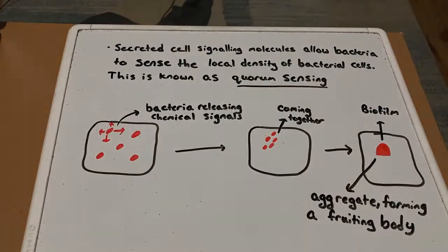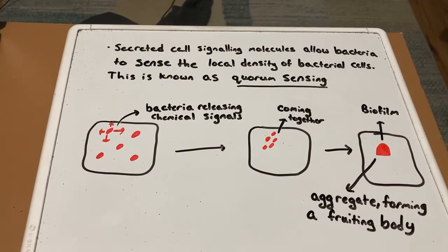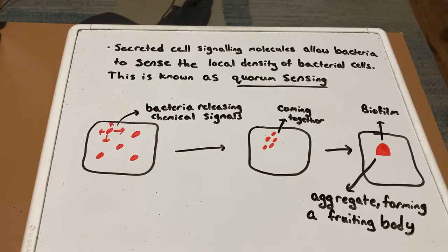Cell signaling is still important in the microbial world, as cells of many bacterial species secrete small molecules that are detected by other bacterial cells. These secreted signaling molecules allow bacteria to sense the local density of bacterial cells, and this process is known as quorum sensing.